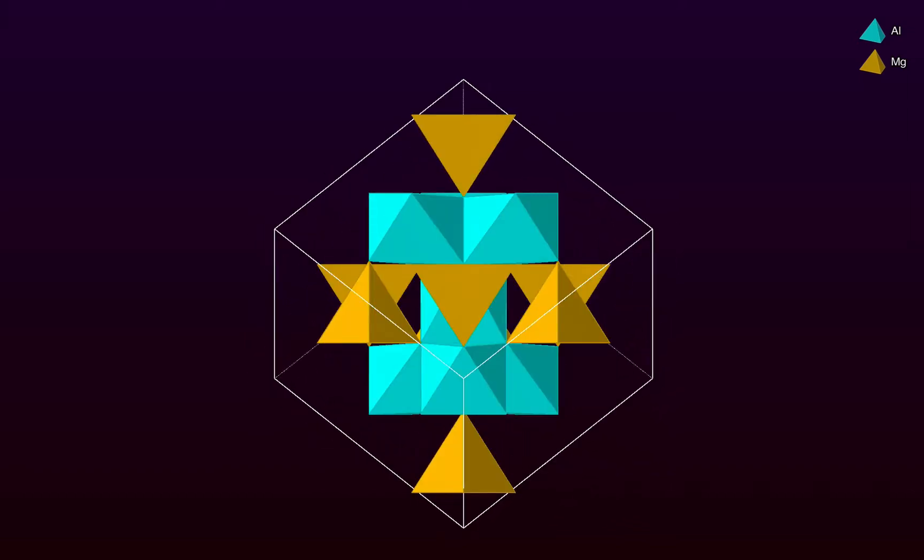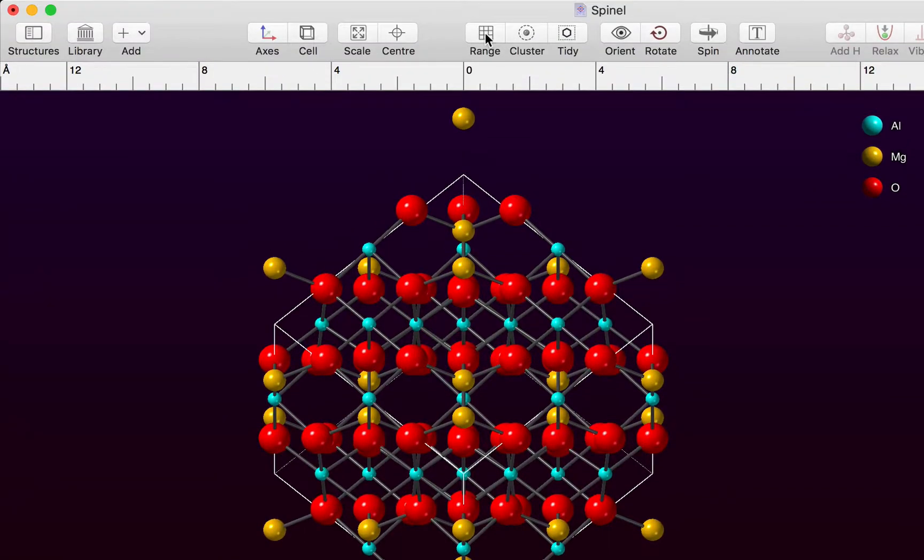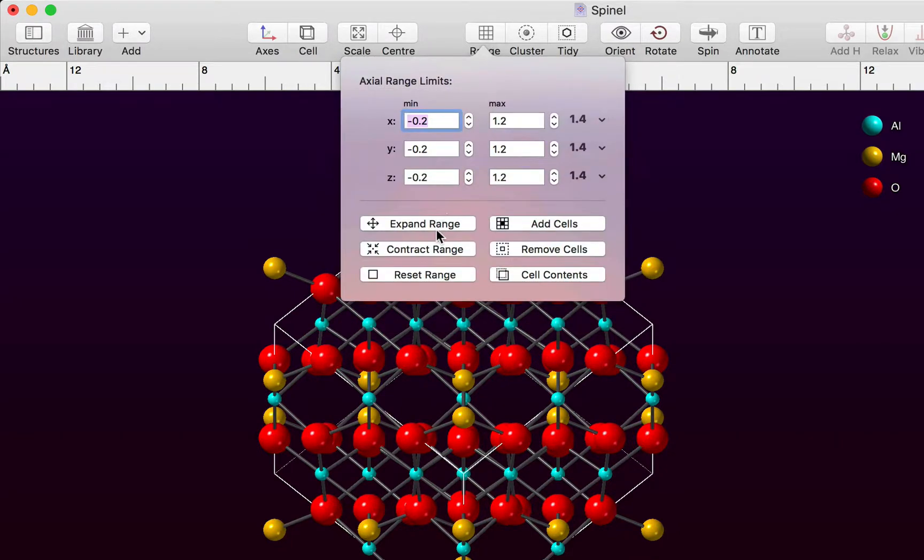We'll start with the polyhedral model of spinel that we built in an earlier tutorial. I'm going to switch to a ball-and-stick model now and I'm going to use the range command to expand the plot range slightly.